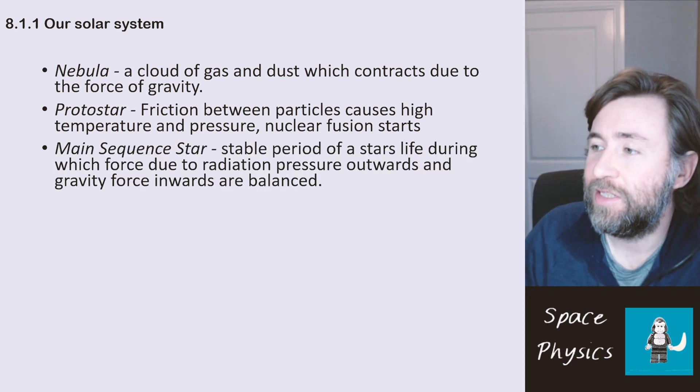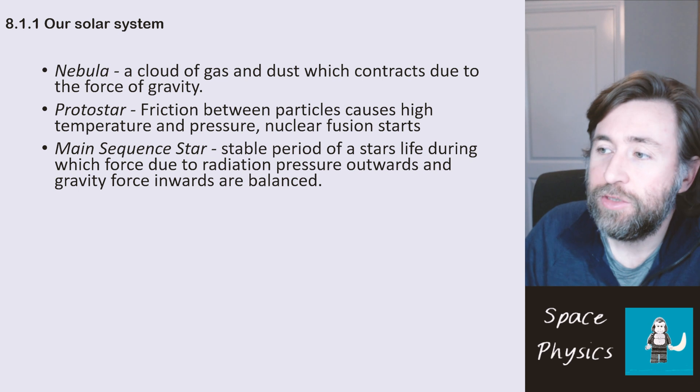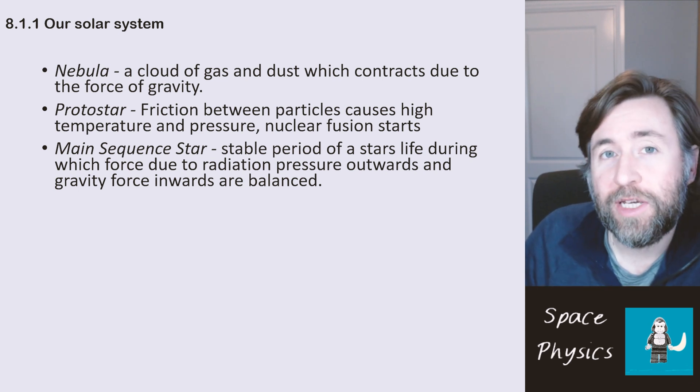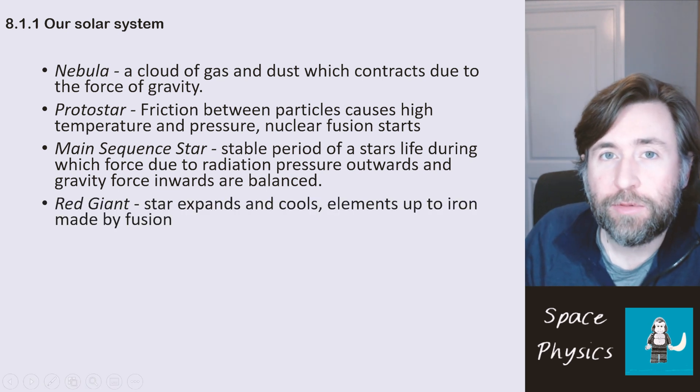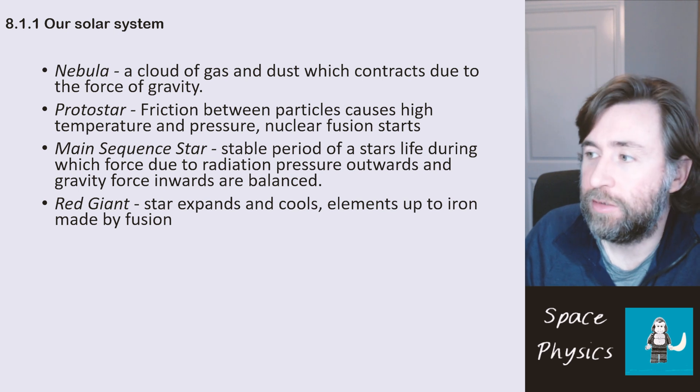A main sequence star is a stable period of a star's life, during which the force due to that radiation pressure outwards and the gravity force inwards are balanced. At the end of that main sequence then the star expands and cools and becomes what we call a red giant star.